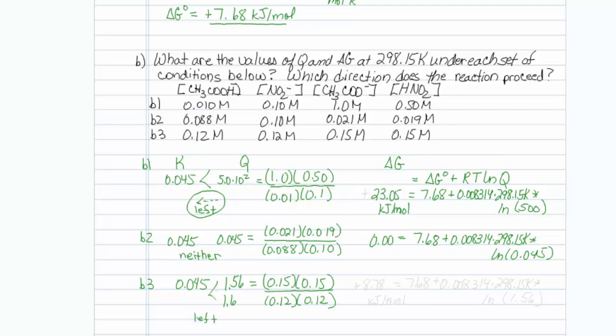So I'm afraid this reaction still is going to proceed to the left because Q is greater than K, but not as strongly as it was before. If we have just a little bit less product, we might be able to get this one to finally go to the right, but so far it's still going to the left in our current concentrations.